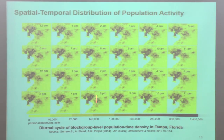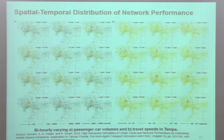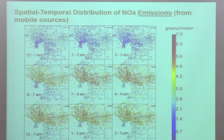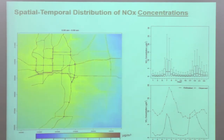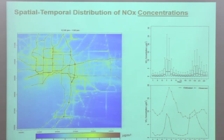Here is the space-time movement of population in Tampa. We can at the aggregate level model the space-time movement of people, which leads to certain patterns of traffic volumes over space and time, as well as patterns of speeds and congestion over space and time in the network, which leads to emissions over space and time. These can in turn be used to model concentrations over space and time — as you can see, during peak periods concentrations increase, with more concentration along roadways.